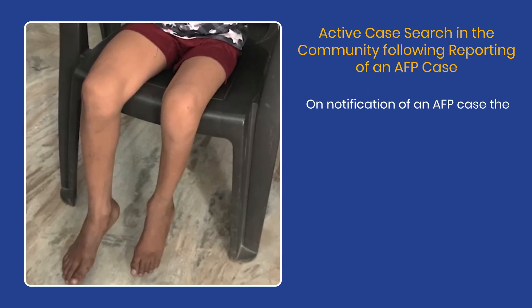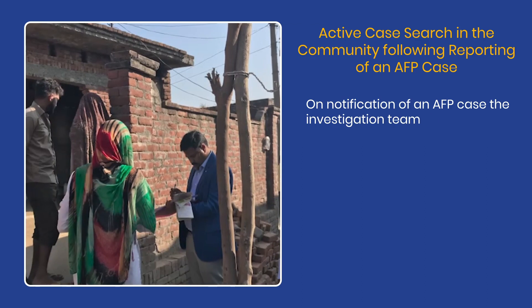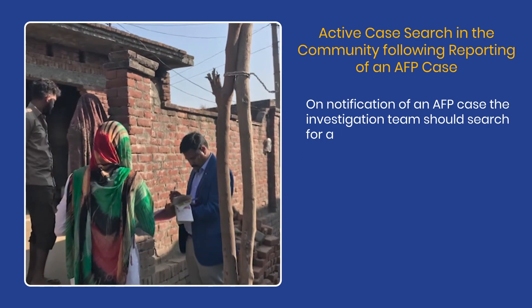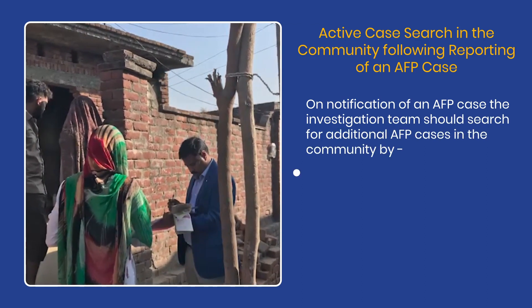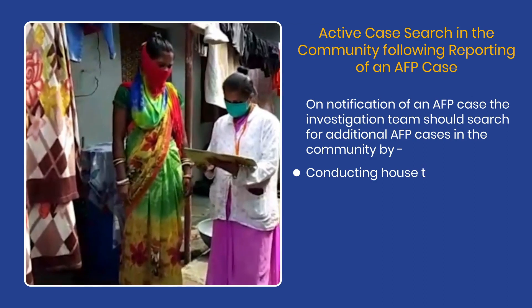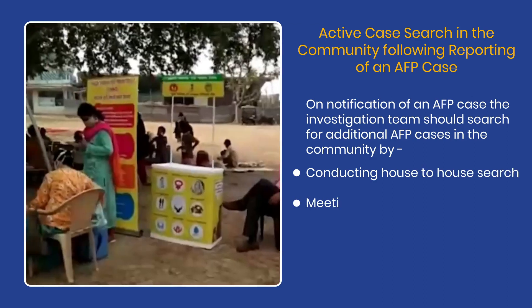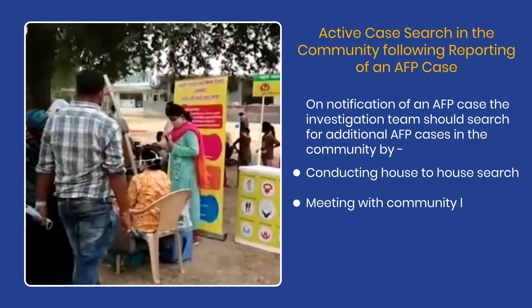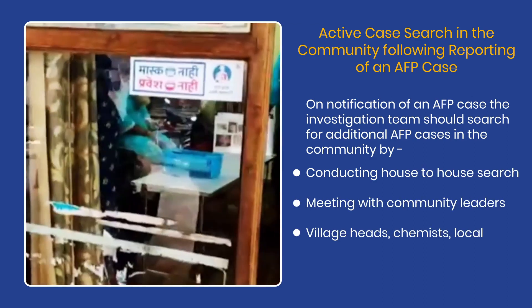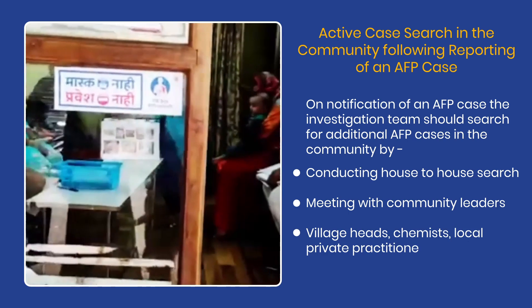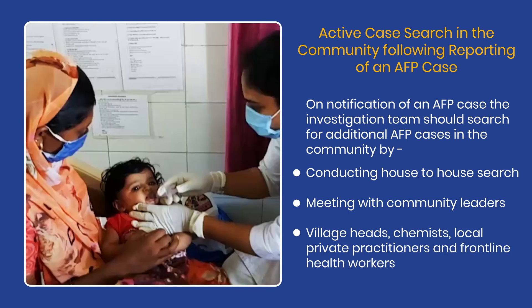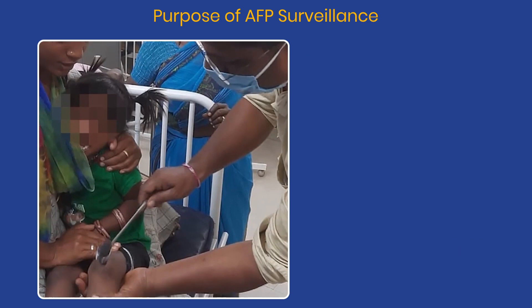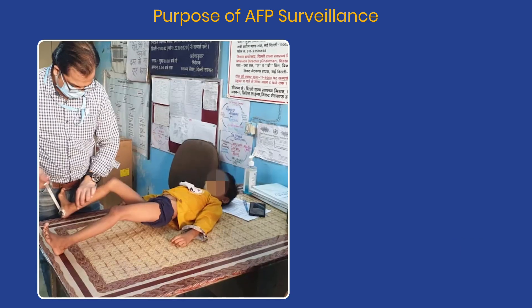On notification of an AFP case, the investigation team should search for additional AFP cases in the community by conducting house-to-house search, meeting with community leaders, village heads, chemists, local private practitioners, and frontline health workers.